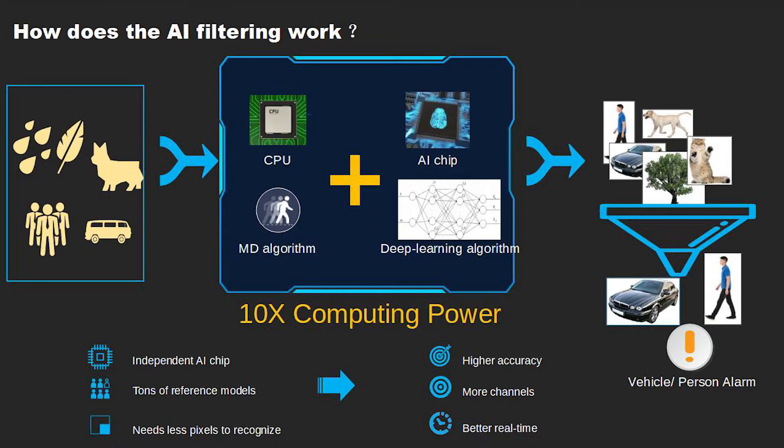As changes happen in the scene, the AI chip using our deep learning algorithm will use reference models to determine if the object in question is a person, vehicle, or other object. With this AI filter, 90% of false alerts are filtered out.